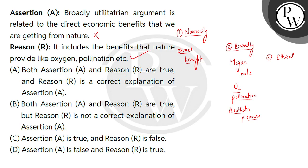Option A — both assertion and reason are true and reason is a correct explanation of assertion — is false. Option B — both are true but reason is not a correct explanation — is also false. Option C — assertion is true and reason is false — is false. The correct answer is option D: assertion is false and reason is true.